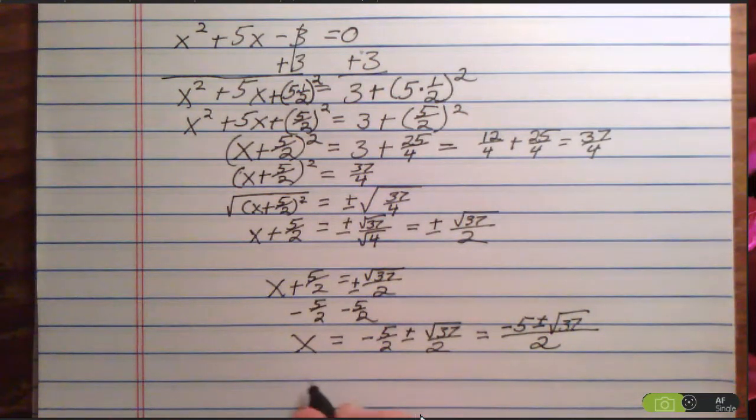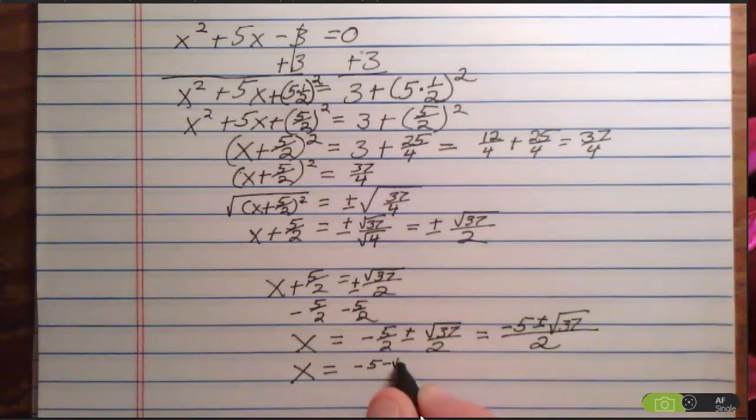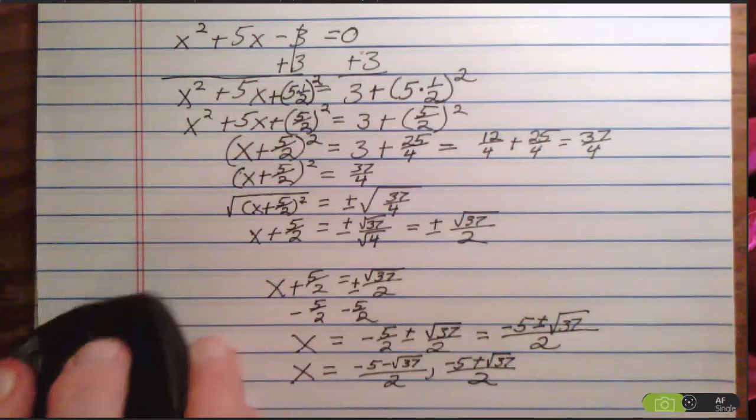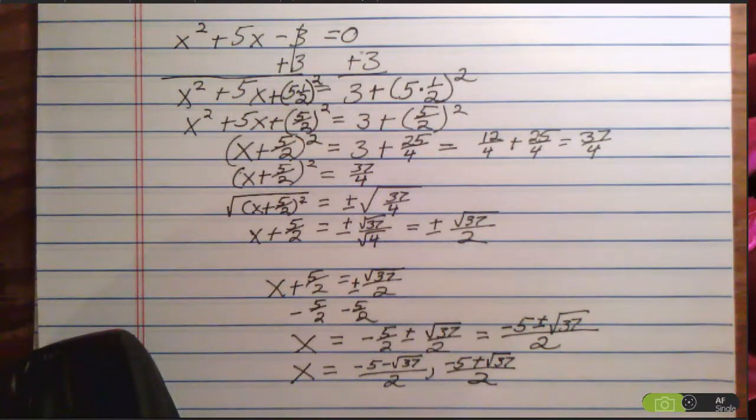If you're answering in MyMathLab, there will be x with an answer box. You'll answer (-5 - √37)/2, (-5 + √37)/2. And there you have it. There are our answers.